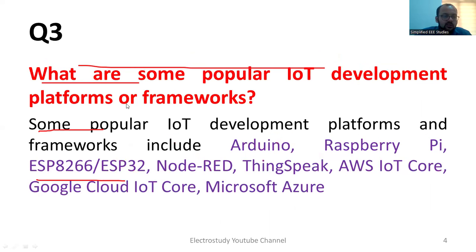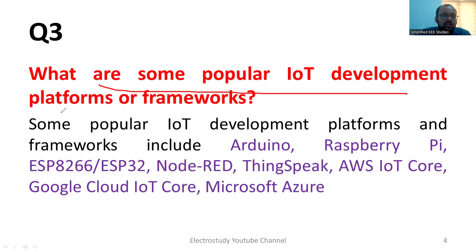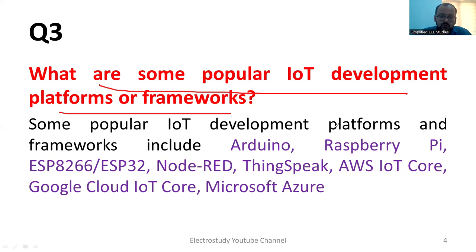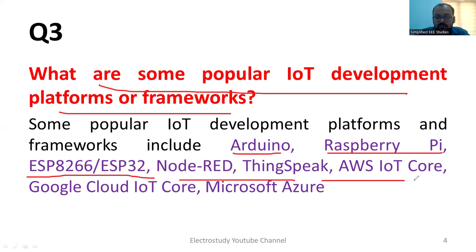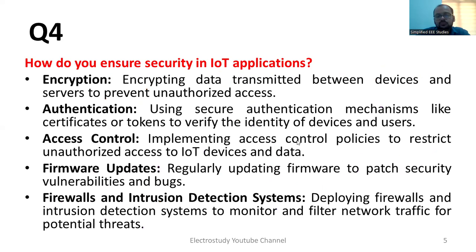The third question: What are some popular IoT development platforms or frameworks? They may ask about the top IoT development platforms. These include Arduino, Raspberry Pi, ESP32, Node, AWS IoT Core, Google Cloud IoT Core, and Microsoft Azure. These are various platforms helpful for developing IoT processes. In schools, people mainly use Arduino because of its basic level and simplicity.